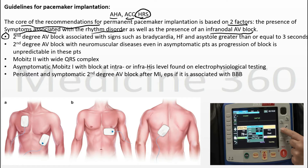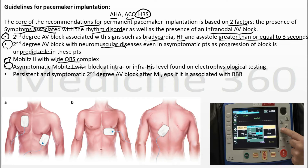Indications include second degree AV block associated with symptoms such as bradycardia, heart failure, or pauses greater than or equal to 3 seconds. Second degree AV block with neuromuscular disorders — for example, Duchenne muscular dystrophy or myotonic muscular dystrophy — carries a risk of unpredictable progression to higher blocks. Mobitz II with wide QRS complex most likely indicates infranodal block. Asymptomatic Mobitz I with infra- or intra-His bundle block on electrophysiological study is also an indication.